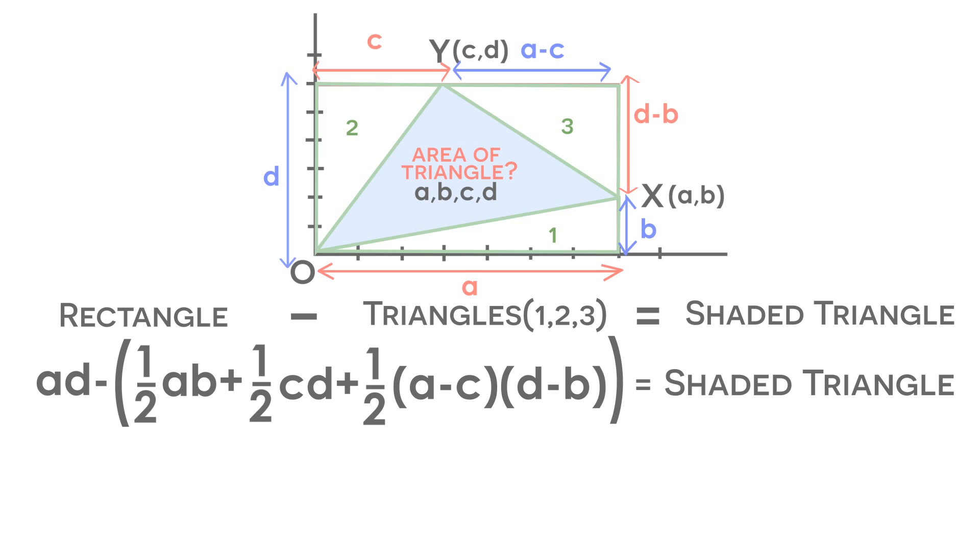All right, so now we can simplify this one-half times (A minus C) times (D minus B) by foiling.